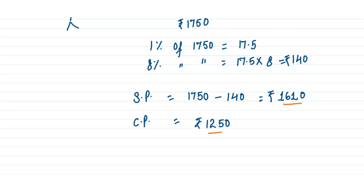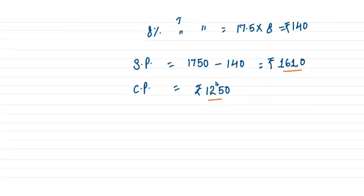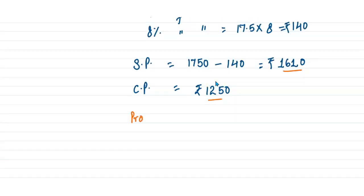He bought it at 1250 and he is selling it at 1610. So how much profit is he making? We have to subtract SP minus CP, so that is Rs. 360.